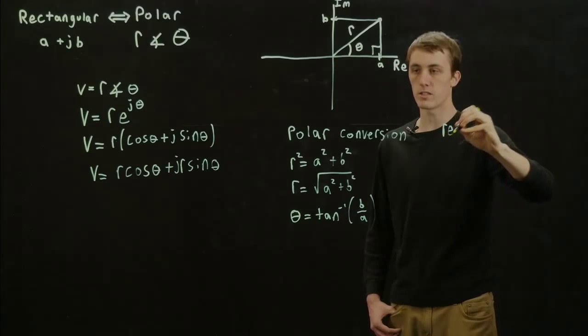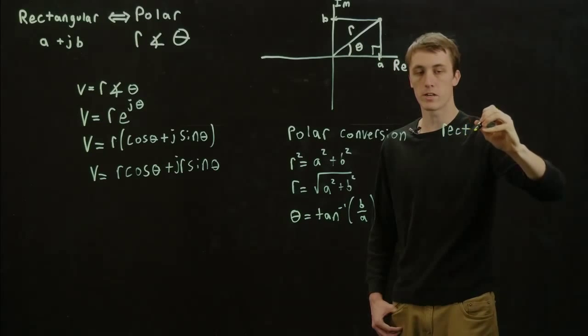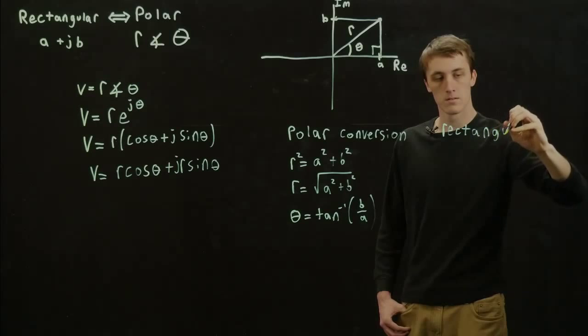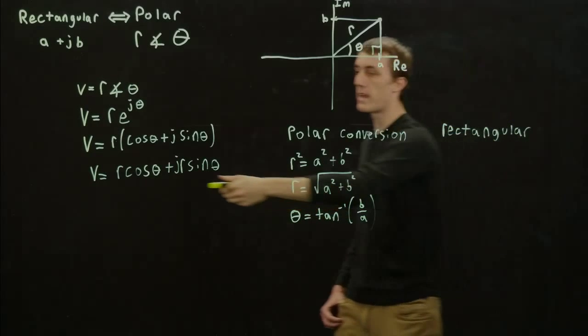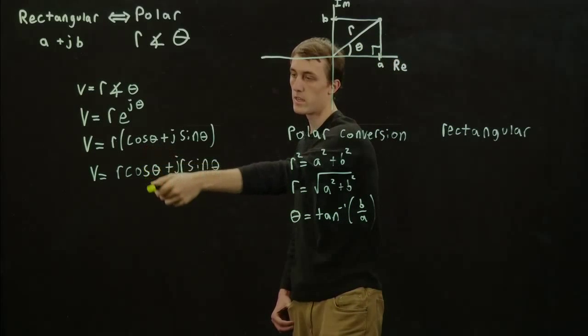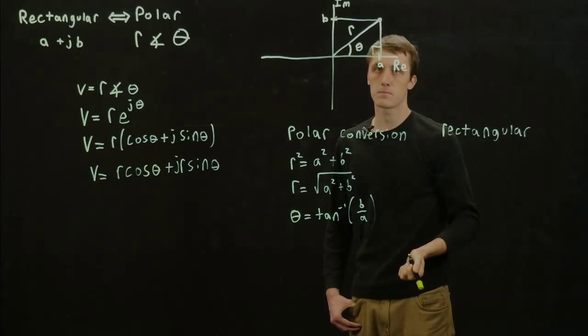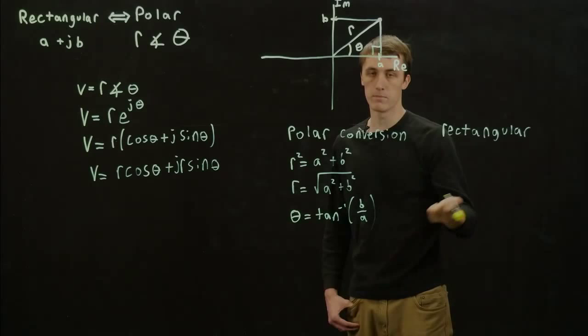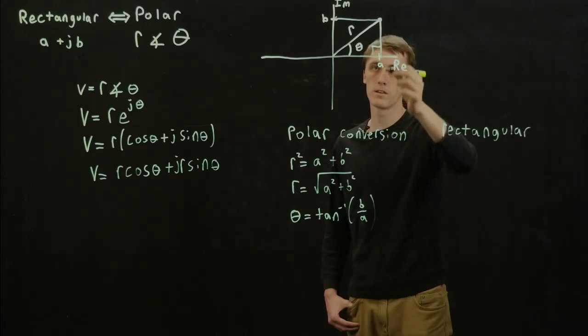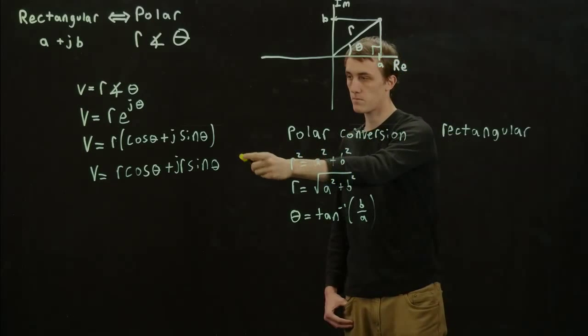And if we want to go from polar to rectangular, we already found that here through Euler's identity, but we can also find that through the same process with A.